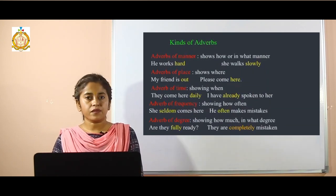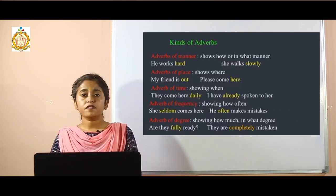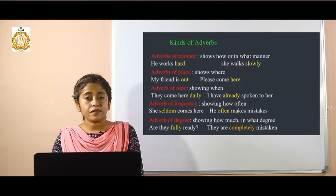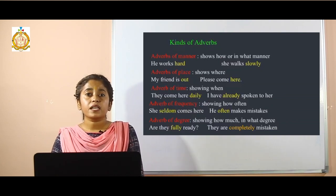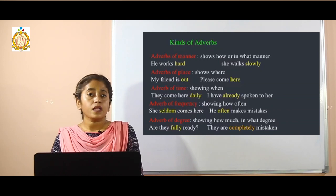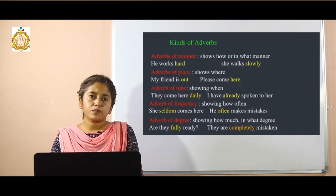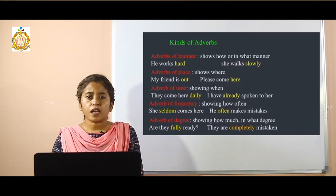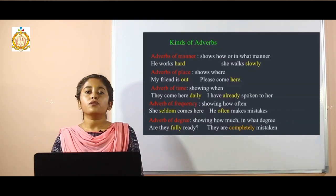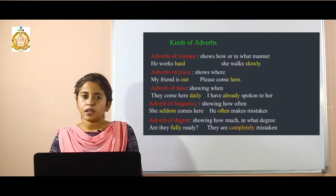Next comes adverb of place. From the word 'place' itself it is clear that it tells us the place of the action — where that action has been performed. 'Where' indicates adverb of place. For example: 'My friends are playing in the ground.' 'In the ground' is your adverb of place. Words like outside and inside — anything indicating the place of the action — are adverbs of place.